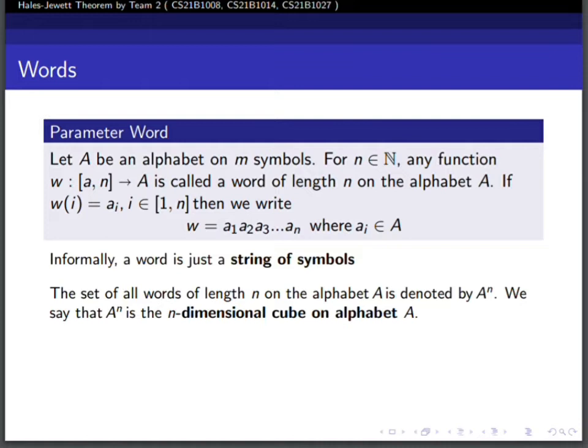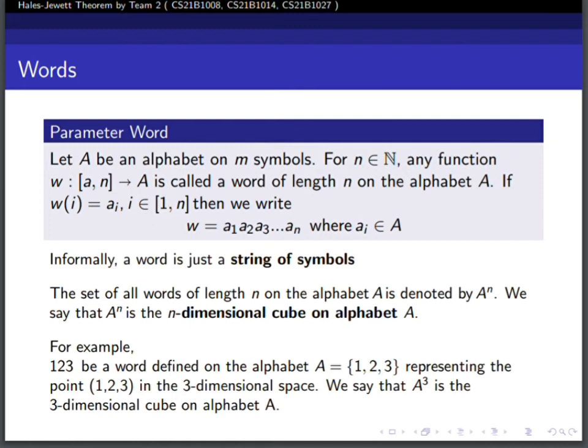If every character of w represents a coordinate of a point in space, for example 1, 2, 3 may represent a point with coordinates 1, 2, and 3, then A^n is called the n-dimensional cube on alphabet A.